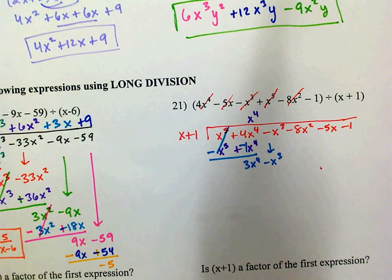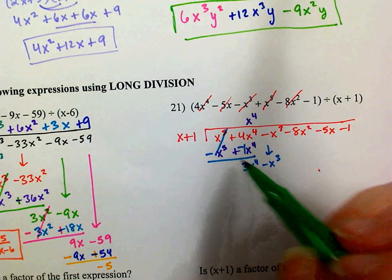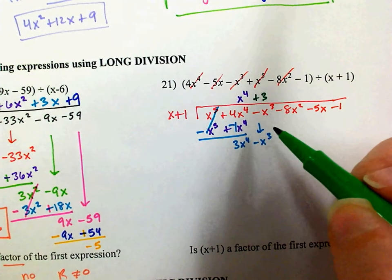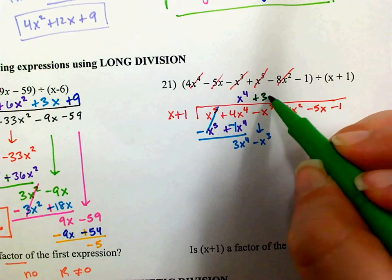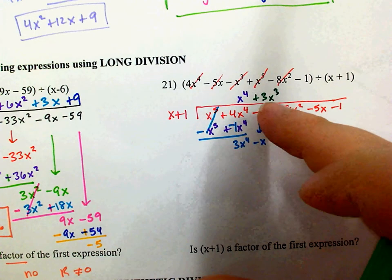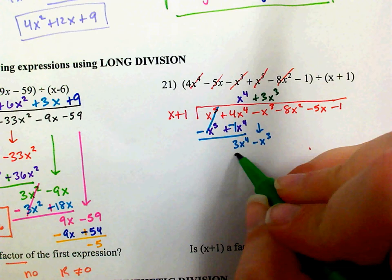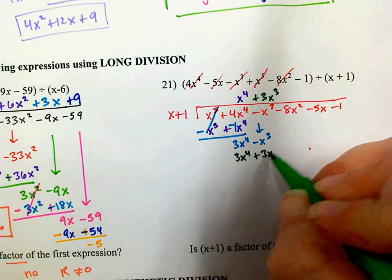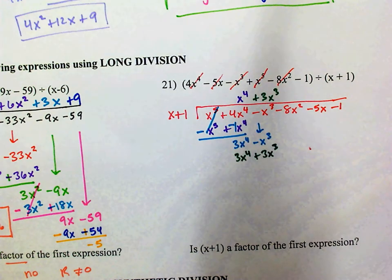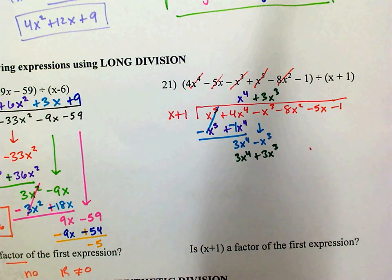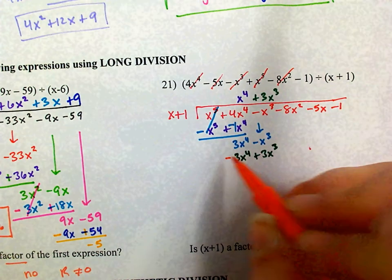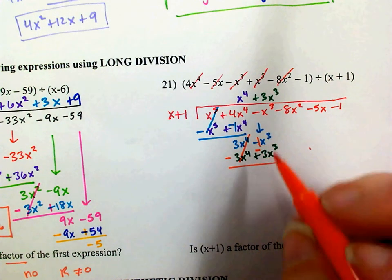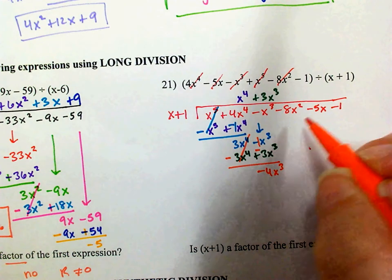I need 3x to the 4th and I've got just x, so I need a coefficient of 3 and 3 more x's: 3x cubed. 3x cubed times x gives 3x to the 4th. 3x cubed times 1 gives 3x cubed. Then subtract — make that a minus. Those cancel out. Negative 1 and negative 3 gives negative 4x cubed. Bring down the negative 8x squared.